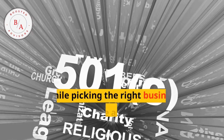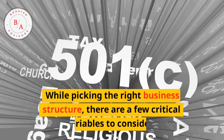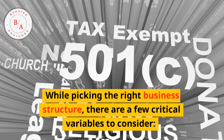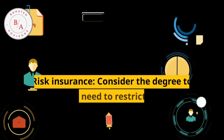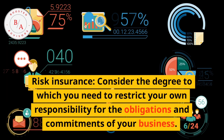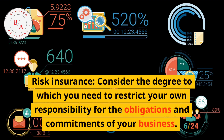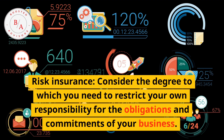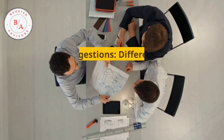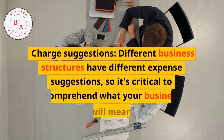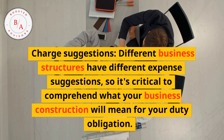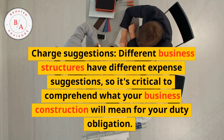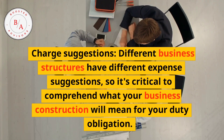When picking the right business structure, there are several key factors to consider. First, risk protection — consider the degree to which you want to limit your personal liability for the debts and obligations of your business. Second, tax implications — different business structures have different tax implications, so it's important to understand how your business structure will affect your tax obligations.